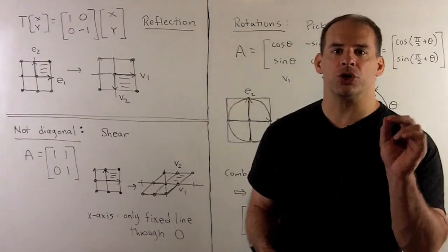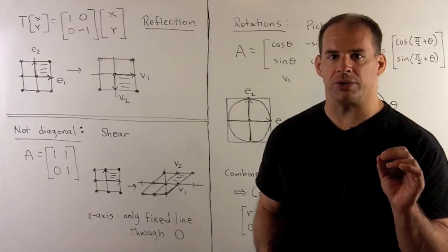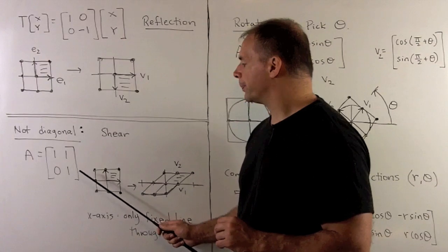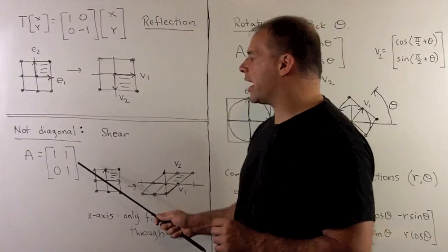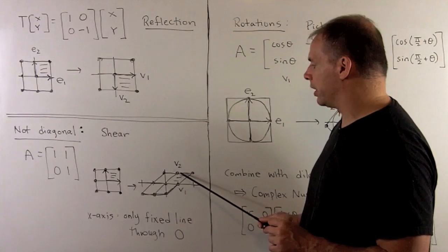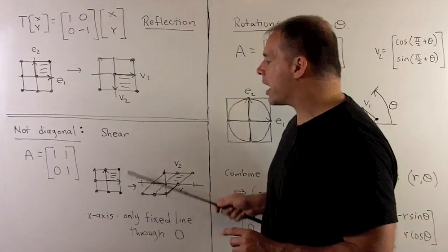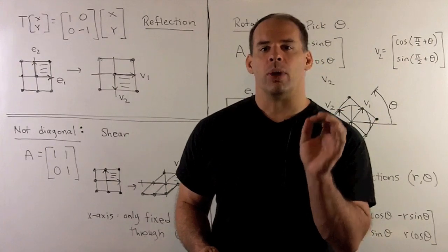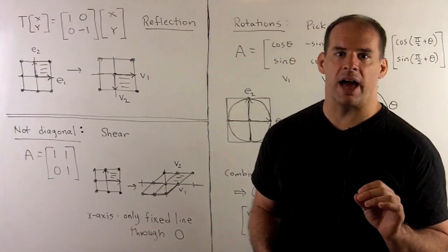Now for transformations not represented by a diagonal matrix, consider the shear transformation. Here A equals [1,1,0,1]. E1 is carried to E1, and E2 is carried to E1 plus E2, the vector (1,1). Working out the grid, we're taking the square and tilting it by 45 degrees. The x-axis is a fixed line, but there are no other fixed lines through the origin.